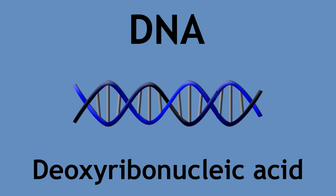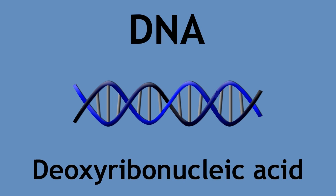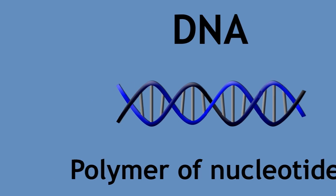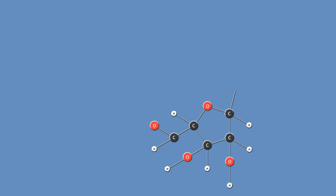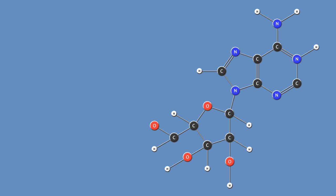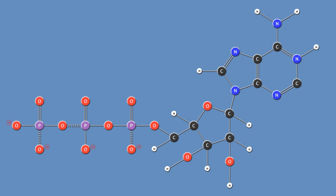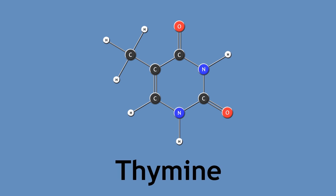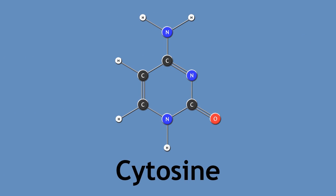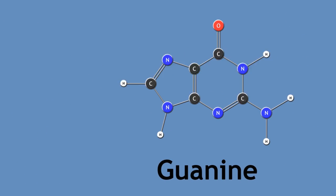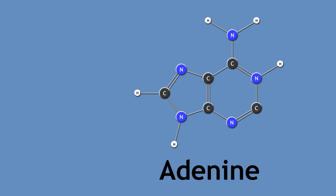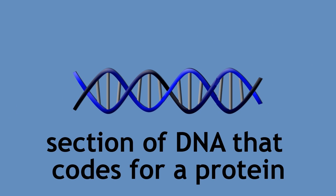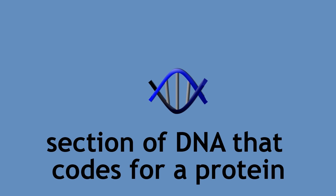So what exactly makes us what we are? DNA, or deoxyribonucleic acid, is a polymer of nucleotides. Each nucleotide is made of a sugar, a nitrogenous base, and two or three phosphate groups. Our DNA is the genetic blueprint of what we are. There are only four nucleic acids that form our DNA, yet the possibilities of arranging these monomers are virtually endless. A section of DNA that codes for a protein is known as a gene.